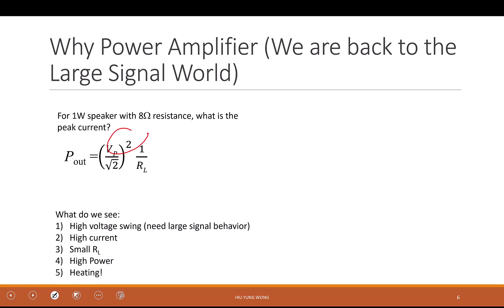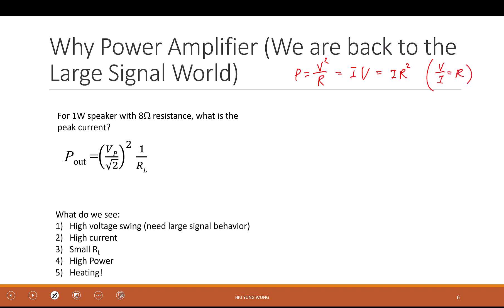Let's appreciate what's going on. If I have a one-watt speaker — the standard impedance is eight ohms, which is a very small resistor. Let's find the peak current. The power equals the peak voltage divided by the square root of 2, that quantity squared, divided by the load resistance. Of course, instantaneous power is V squared over R, or current times voltage, or I squared times R — you get the same thing by substituting Ohm's law — but that is the instantaneous power.